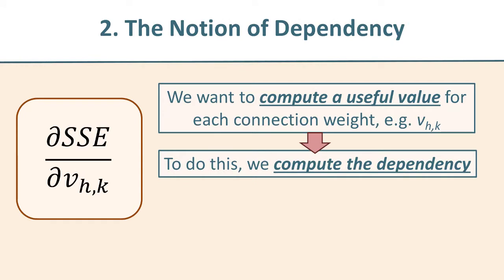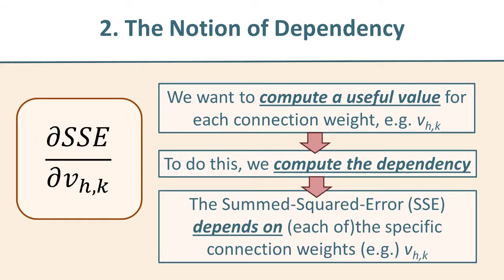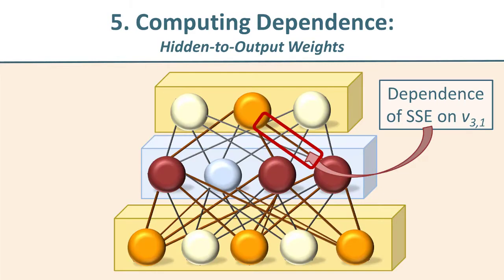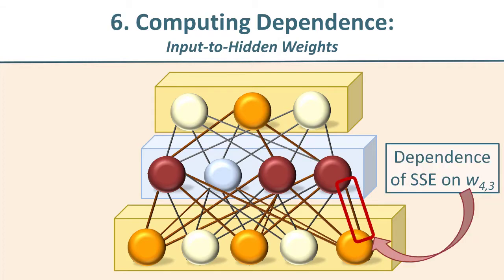What we want is to find the dependence of the summed squared error — abbreviated as SSE — on each of the specific connection weights. We have two different kinds of connection weights: those going from the middle layer, or hidden layer, to the output (that's covered in video five), and a somewhat more complex derivation looking at the connection weights going from the input to the hidden layers, which will be in video six.